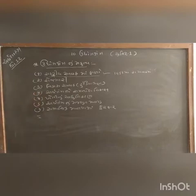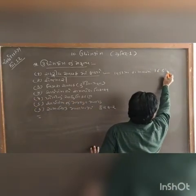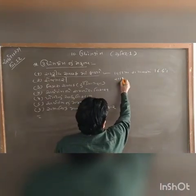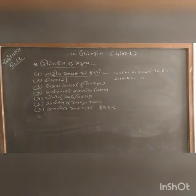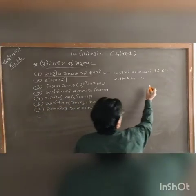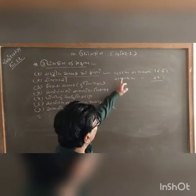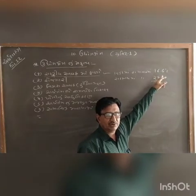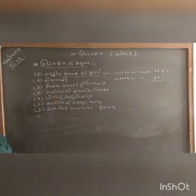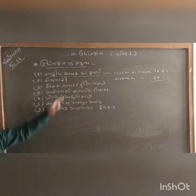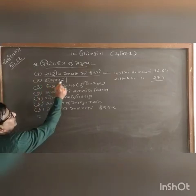The contribution of the industrial sector to national income at the national level is 23.3 percent. At the state level in Gujarat, the industrial sector's contribution to state income is 6.76 percent.